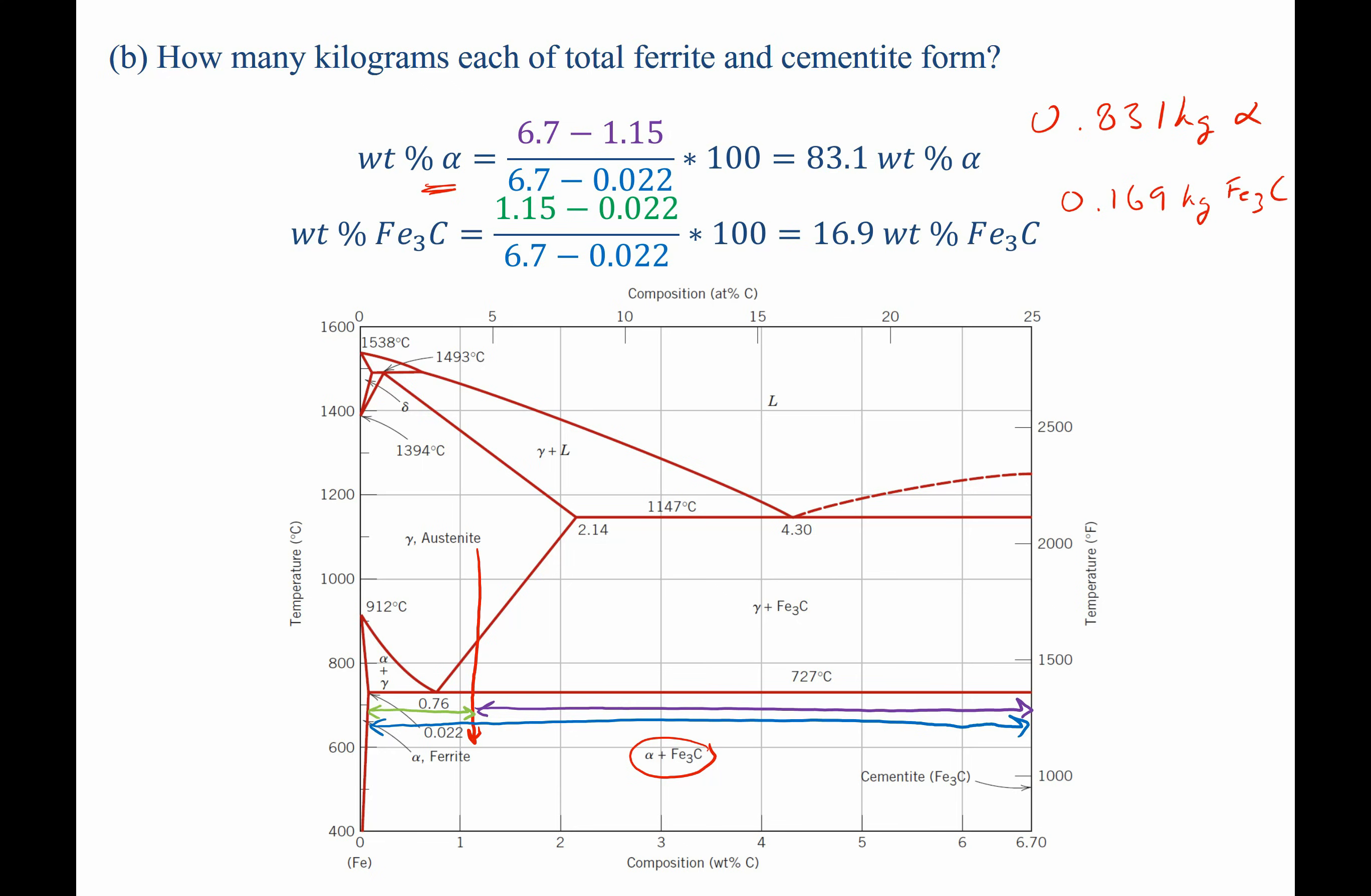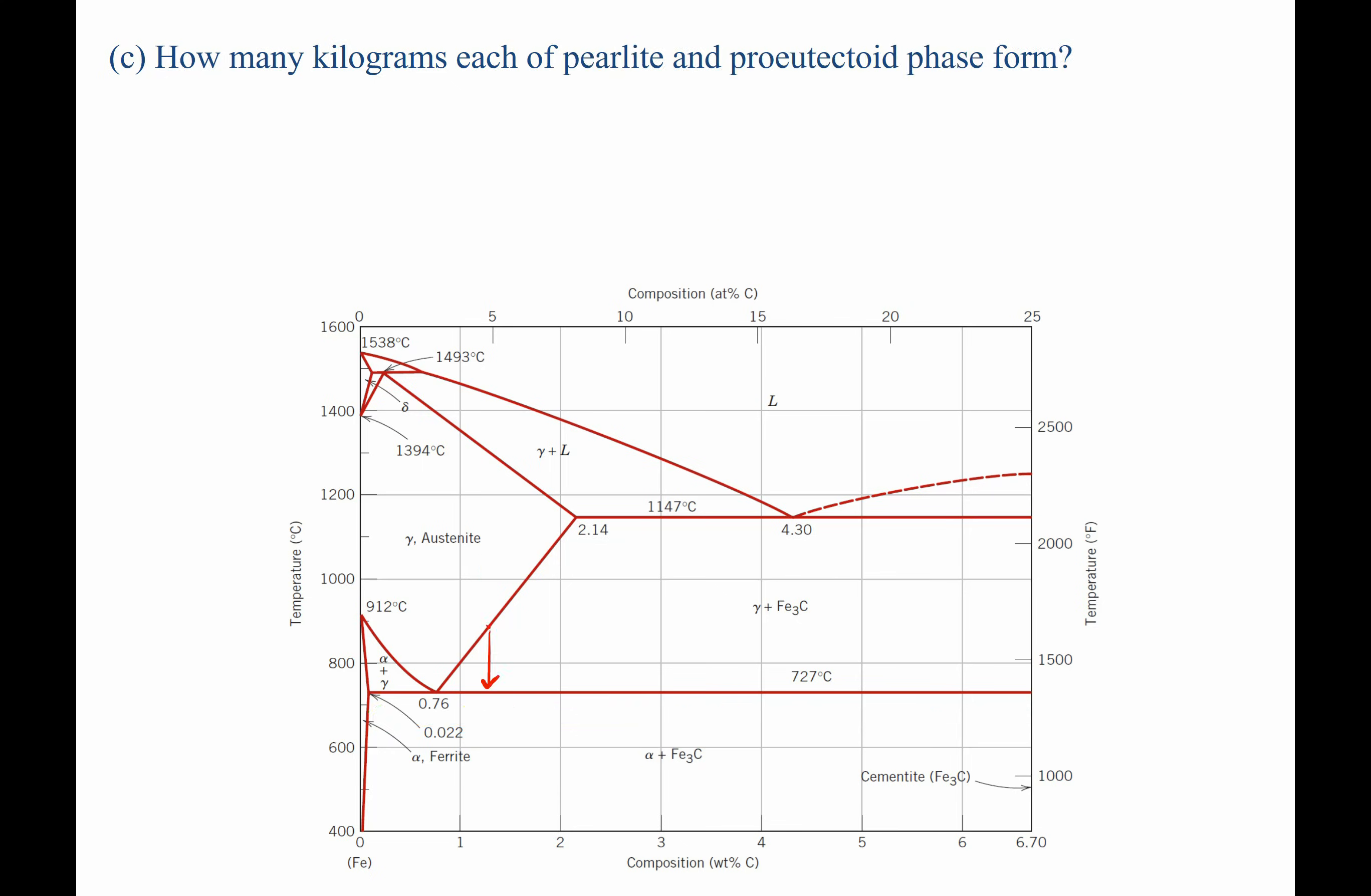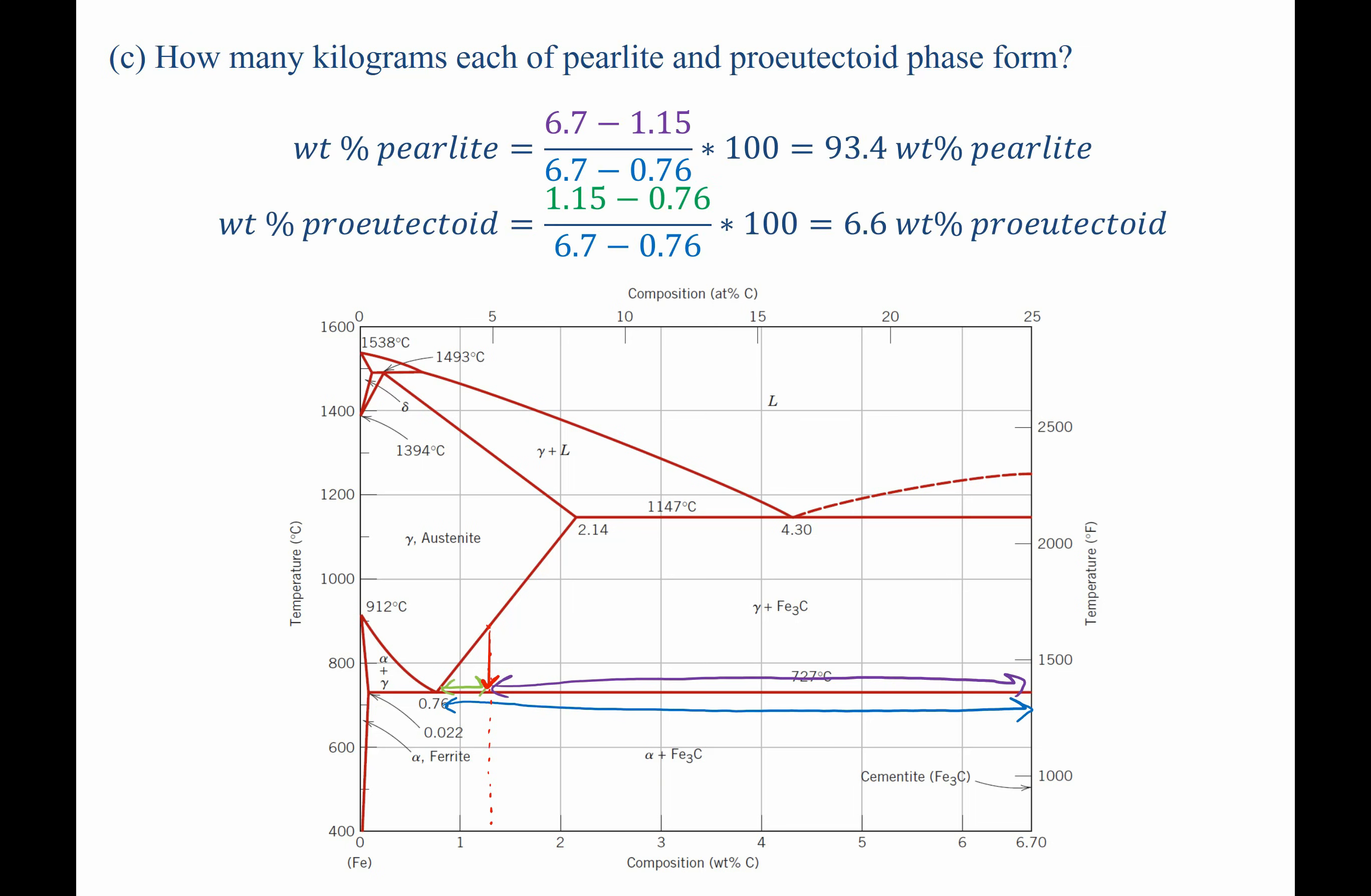We can do the exact same approach for part C, which asks us how many kilograms each of pearlite and pro-eutectoid phase form. Now, we're going to be talking about the region above the eutectoid temperature, so let's overlay our lines as before. Again, we can write out the solution to this using the lever rule, mathematically as follows.